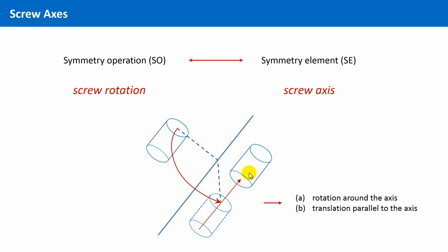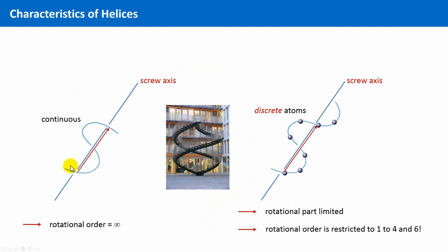If you look at a genuine helix, then you will easily infer that the rotational part can be an arbitrary angle. But in crystals, the rotational part, likewise as discussed for the pure rotations, is again limited because it is composed of concrete entities, and because there is this special thing that rotational symmetry in crystals is restricted to the order 1 to 4 and 6.